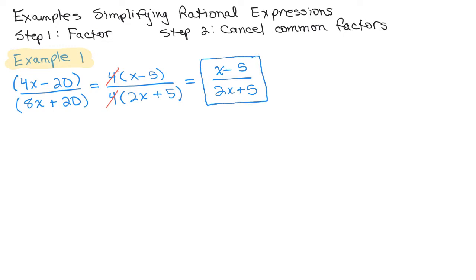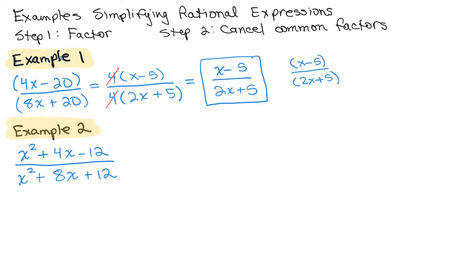You still cannot cancel the 5s. You cannot cancel the Xs because remember, X minus 5 is the factor. X is not a factor. 5 is not a factor. It's that whole thing, X minus 5 and 2X plus 5. If you want, you can keep parentheses around it or write it the way I have in the box here.